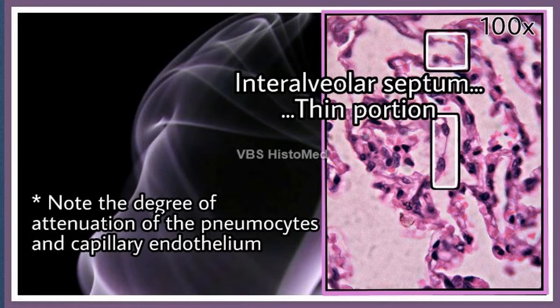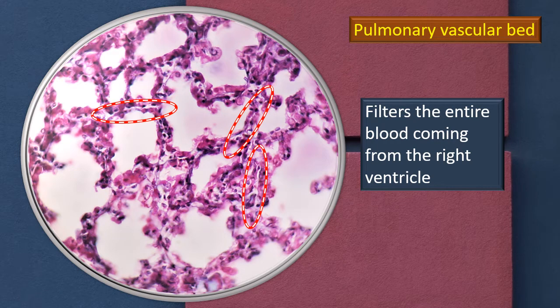There are both thick and thin portions of the septum. I have identified a classically thin portion, highlighted in a square, where the degree of attenuation of the pneumocytes and capillary endothelium is particularly noted. The pulmonary vascular bed, embedded between the pneumocytes on two sides, virtually filters the incoming blood from the right ventricle — blood that reaches the lung through the pulmonary artery is filled into this bed, filtered, and then passes into the pulmonary vein.